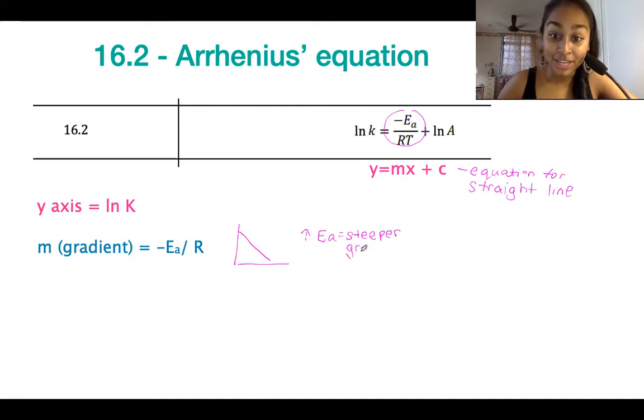So when you have an equation, sorry, when you have a reaction with a large activation energy, that's going to have a steep line when graphed out according to Arrhenius' equation.